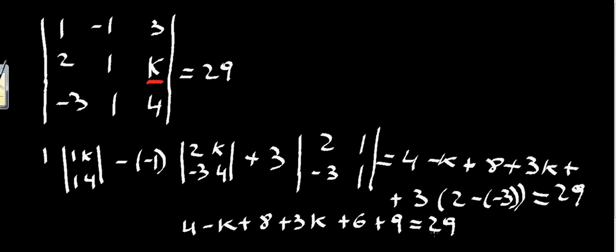If we rewrite this, what we get is that 2k equals 2, therefore k equals 1, and this is our solution.